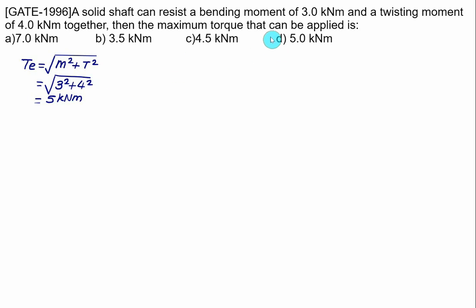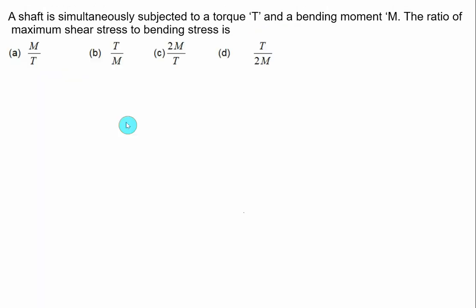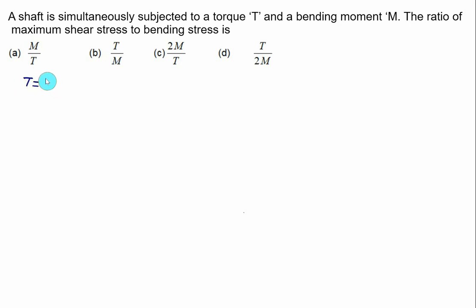Choice D is correct. A shaft is simultaneously subjected to torque T and bending moment M. We have to calculate the ratio of the maximum shear stress to the bending stress. When torque T is applied, it produces a shear stress given by pi divided by 16 multiplied by d-cubed multiplied by tau-max.